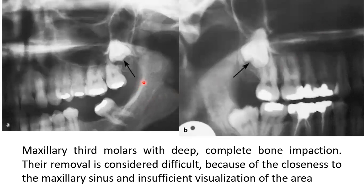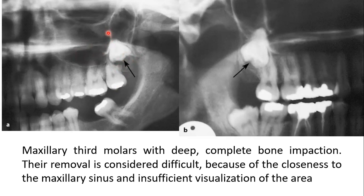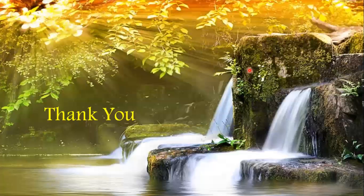Here you can see a maxillary third molar with deep complete bony impaction. Removal is difficult because of the closeness with the maxillary sinus, insufficient visualization, difficult access, and more bone having to be removed to extract the tooth.